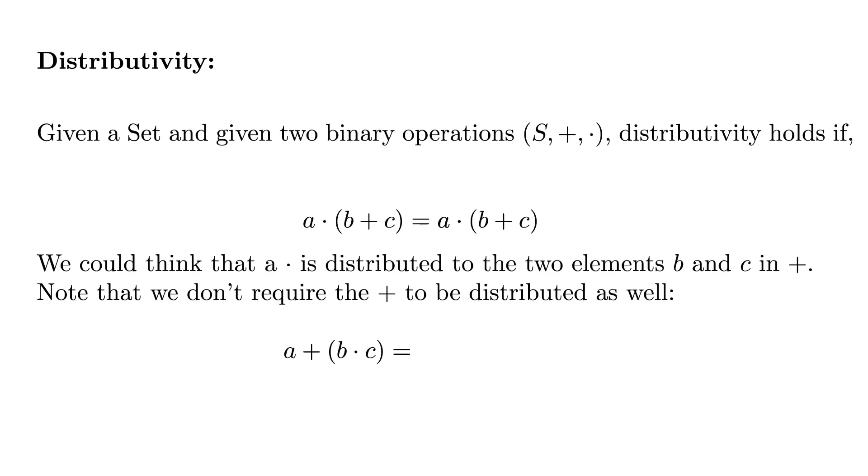Given a set and given two binary operations, plus and times, distributivity holds if, for all elements, A times (B plus C) equals (A times B) plus (A times C). We could think that A times is distributed to the two elements B and C in plus. Note that we don't require the plus to be distributed as well, which would mean A plus (B times C) equals (A plus B) times (A plus C).